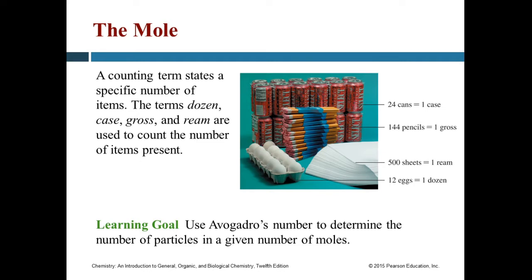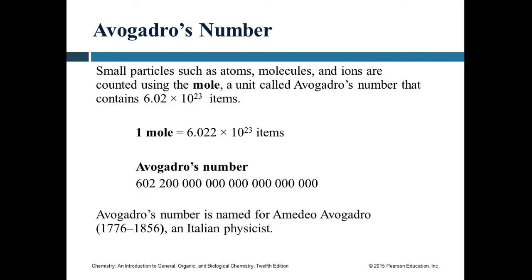The mole is doing exactly the same thing. The thing about the mole is you never encounter it outside of chemistry or physics, so it's not something you're familiar with, like a dozen or a gross. Most of you probably aren't familiar with a ream either. But the mole is just 6.022 times 10 to the 23 things. That's also called Avogadro's number — 6.022 times 10 to the 23.